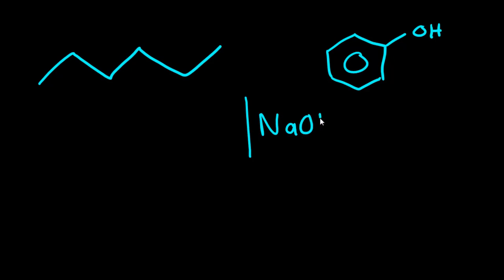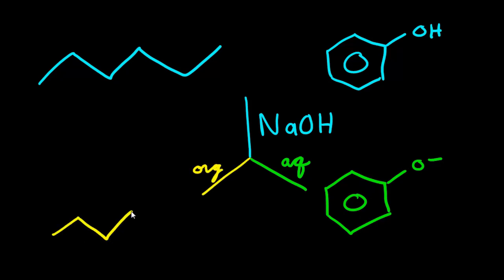When you add NaOH, this time in the aqueous layer, what you're able to produce is the phenolate ion. And in your organic layer, what you have is the hexane. So that was also pretty simple.